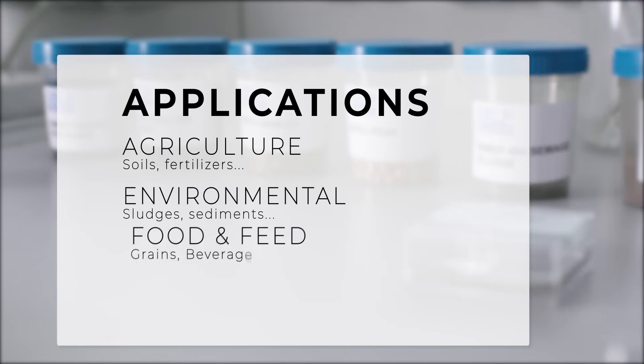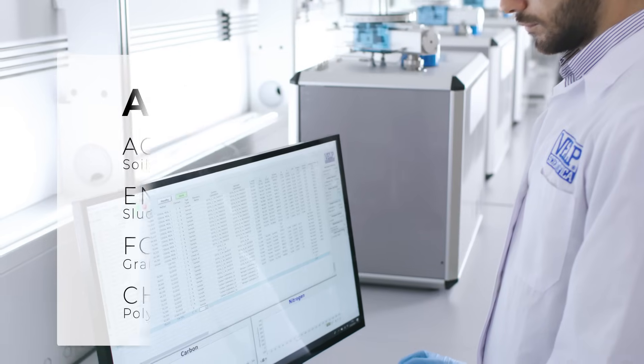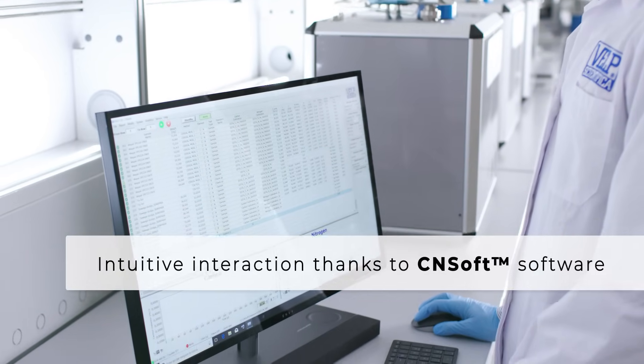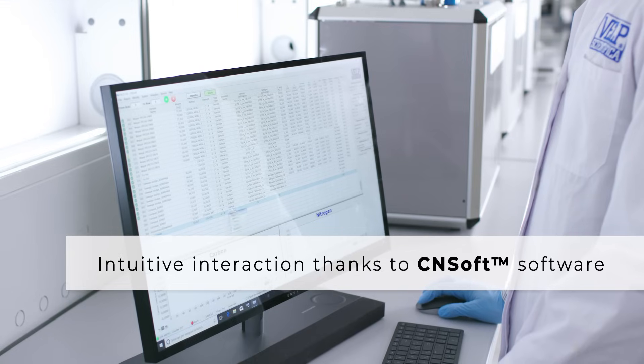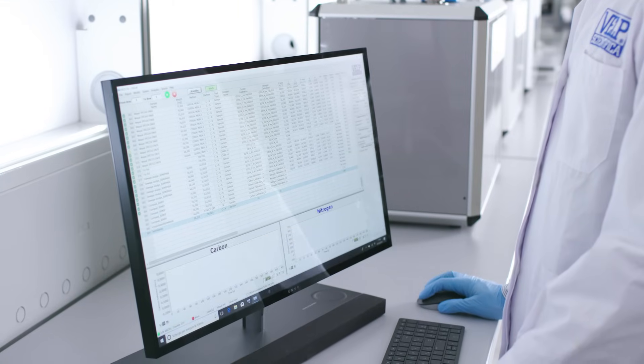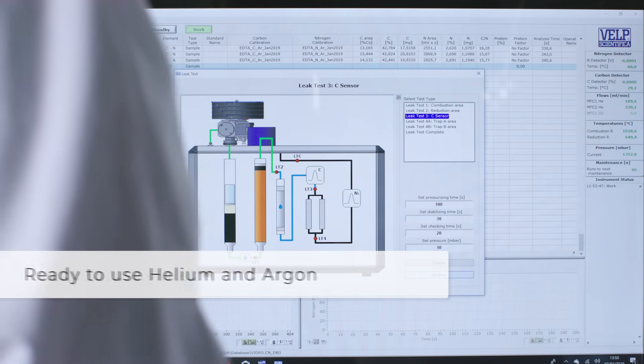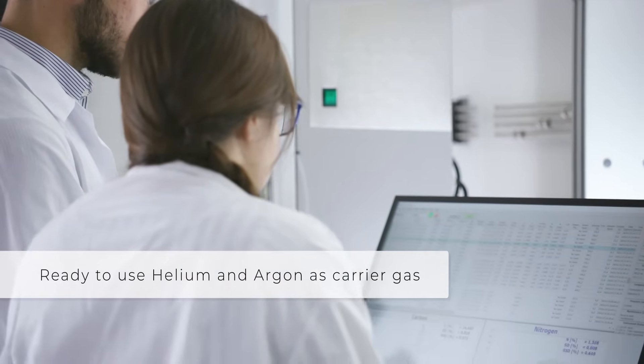Environmental, food and feed, and chemical sectors. The VELP CN802 is a versatile and cost-effective analyzer controlled by the powerful CNSoft software and is able to work with carrier gases such as helium and argon without the need of any hardware modifications.